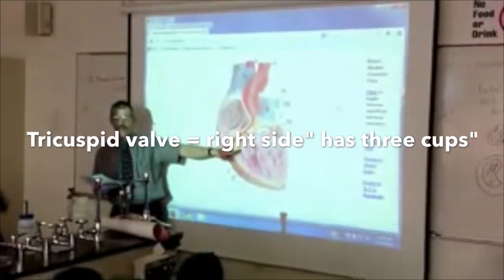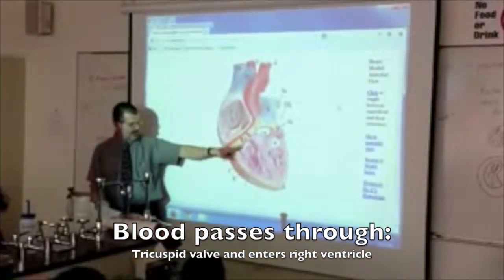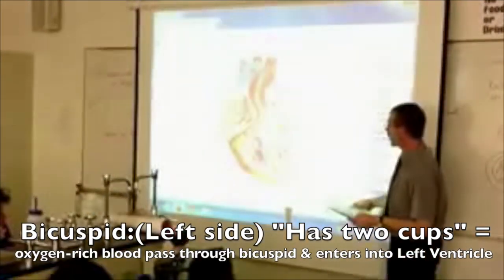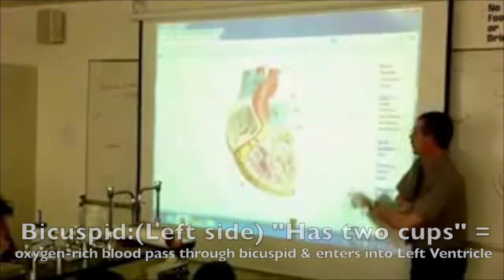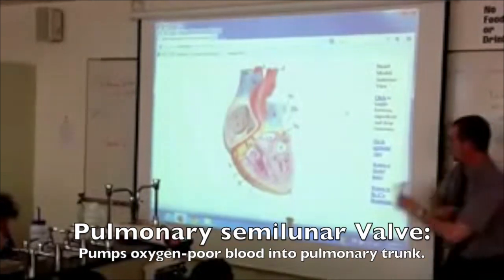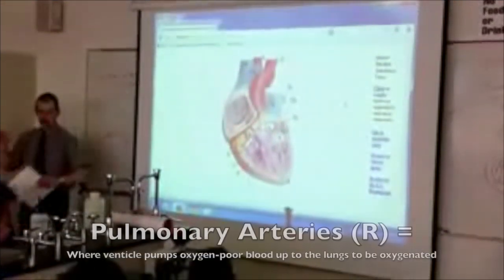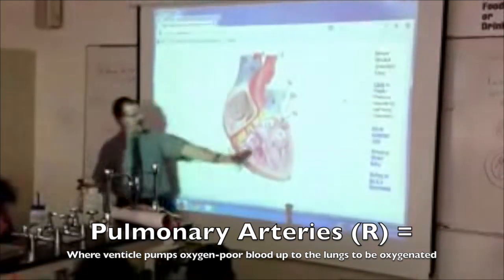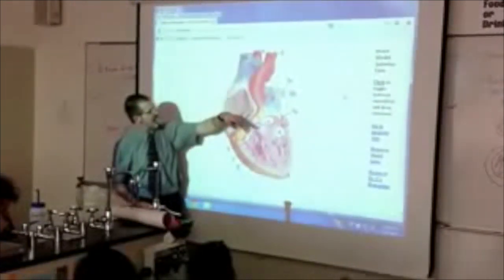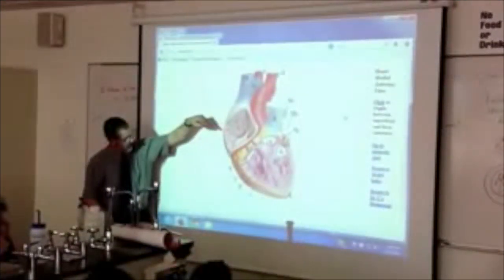Number three is a valve — which one? Tricuspid. Number six is the bicuspid. Number E is the pulmonary valve, because it's coming off the right side into number four. What tube is number four? Pulmonary arteries — leaving my right side, going to my lungs. The pulmonary veins will be going on the other side.